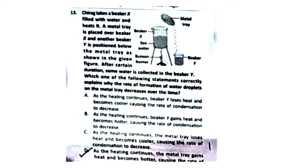Question 32 (mislabeled): A beaker is filled with water and a metal tray is placed over it, with another beaker below the tray. After a certain duration, some water is collected in the lower beaker. Which statement correctly explains why the rate of formation of water droplets on the metal tray decreases over time?